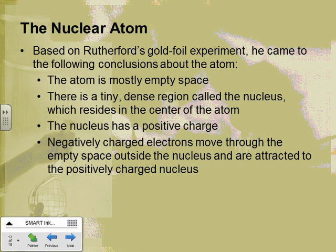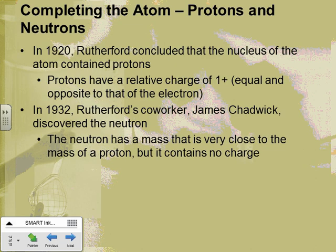Rutherford's model explained the atom pretty well for a few years. Rutherford also identified the positively charged particles in the nucleus — he called those protons, with a charge of plus one, equal and opposite to that of the electron but more massive. Then a co-worker of his in 1932 discovered the neutron.